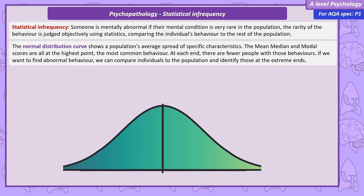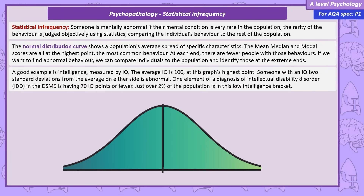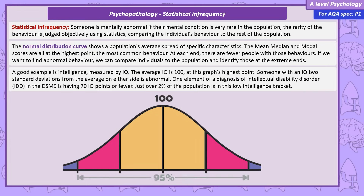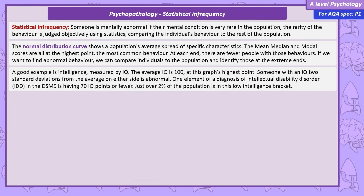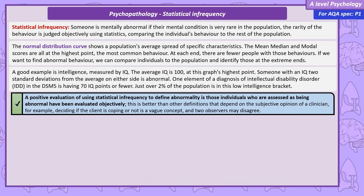One characteristic of interest to psychologists is intelligence. If we measure intelligence according to IQ, the average IQ is 100, and it's at the highest point of this graph. We can argue someone who is two standard deviations away from the average is abnormal. In this low intelligence bracket, we would include just over 2% of the population. We could argue this is an objective way of measuring who falls into the category of low intelligence, and who is in most need of support.